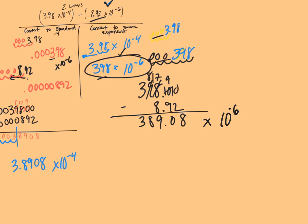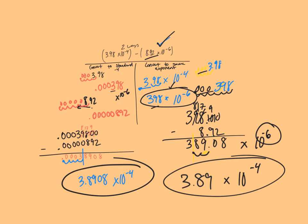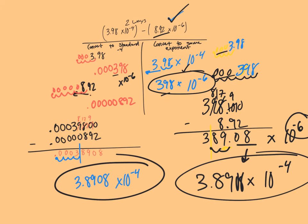Now I have an answer of 389.08 times 10 to the negative sixth. However, I don't have a good scientific notation number. I need that number to be between 1 and 10, so I need to move my decimal there: 3.8908. My original problem says move the decimal 6 to the left; I've already moved it 2 to the left to get into scientific notation form, so I still have 4 more to go — times 10 to the negative fourth. Comparing the two methods: 3.8908 times 10 to the negative fourth — exact same. The processes are long and complex with a lot of conversions. Either convert totally to standard or convert to the same exponent. You may need to convert back at the end, but that's our process. Good luck.